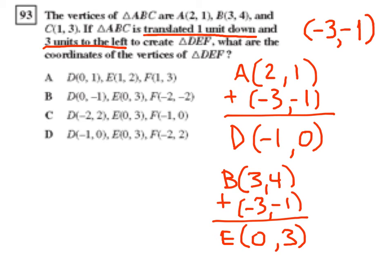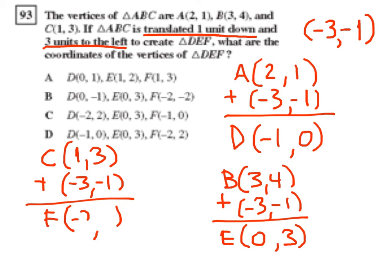And then point C, 1 comma 3, plus our translation of negative 3 comma negative 1, will leave us with point F at 1 plus negative 3 is negative 2, and 3 plus negative 1 is positive 2.